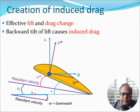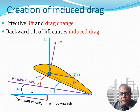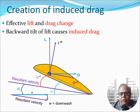This downwash velocity reduces alpha, which in turn causes a change in the lift and drag. The effective lift and drag acting on the finite wing change because there is a backward tilt of the lift vector caused by the downwash velocity. This leads to what is known as induced drag. The effective drag is parallel to the resultant velocity and the effective lift is normal to the resultant velocity, whereas the blue lift and drag are normal and parallel to the actual velocity V. This change in lift and drag is entirely due to the presence of the finite wing.